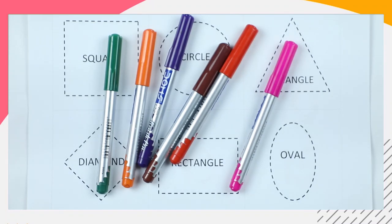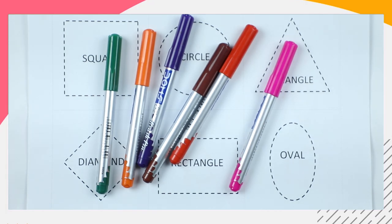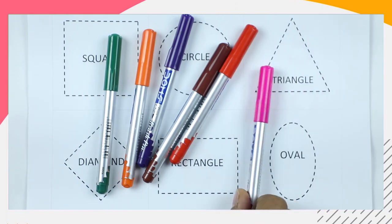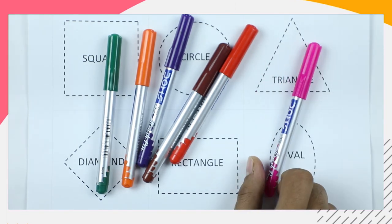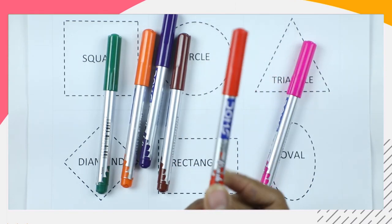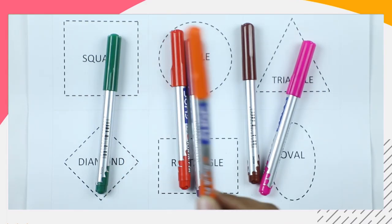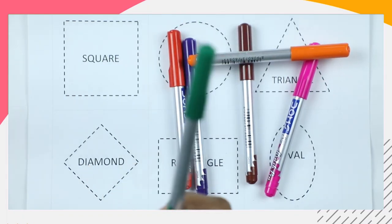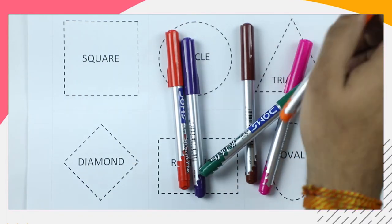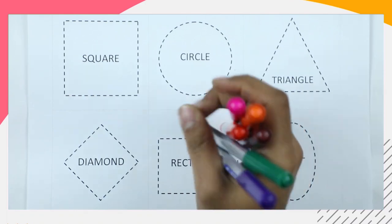Hello friends, today we learn shapes. Which shape is this? Square, circle, triangle, diamond, rectangle, oval. We learn shapes with some colors: pink color, red color, brown color, purple color, orange color, green color. So let's start learning shapes.